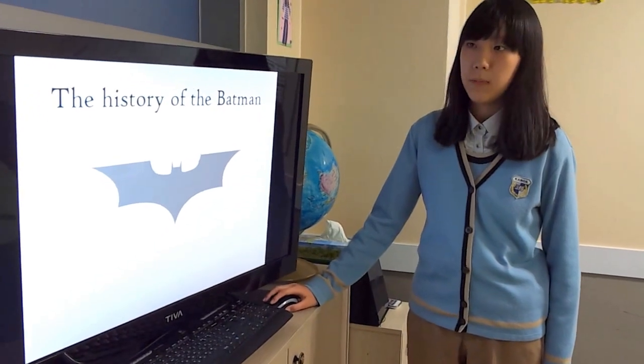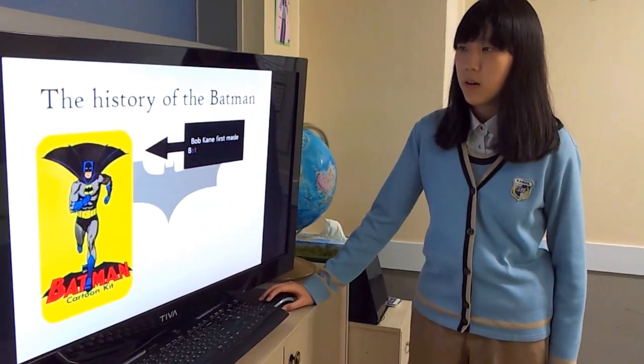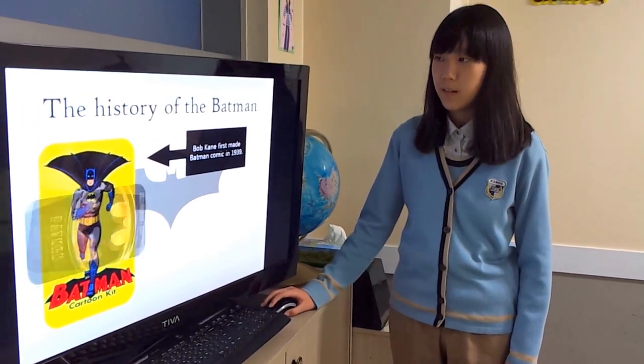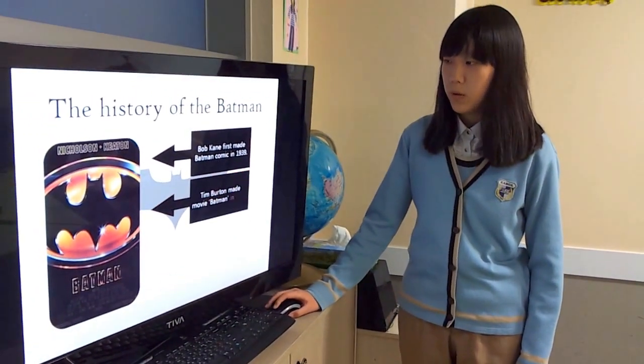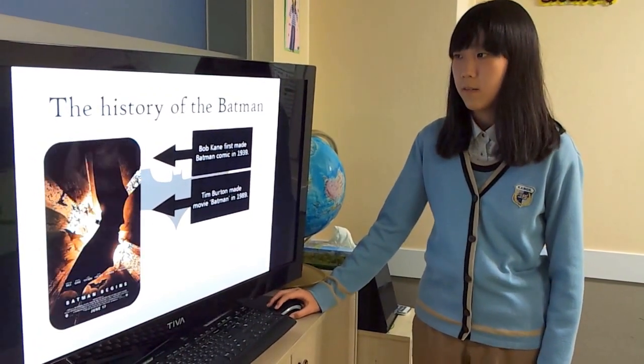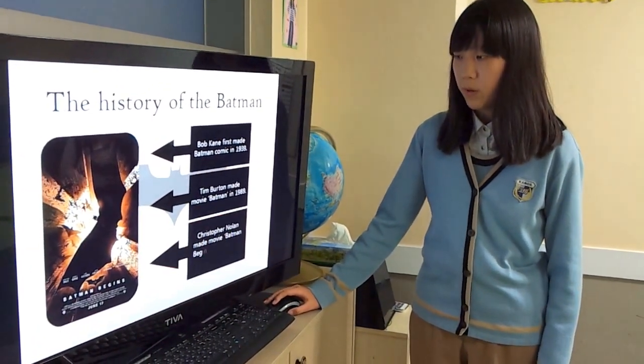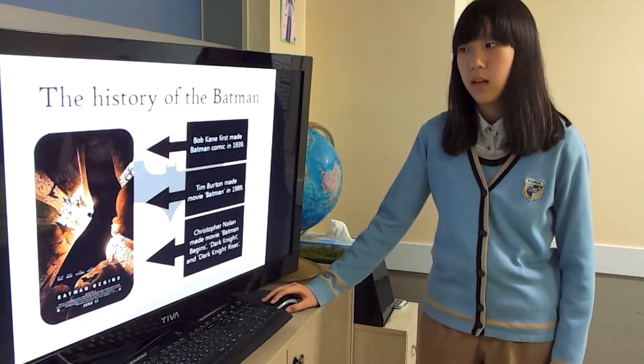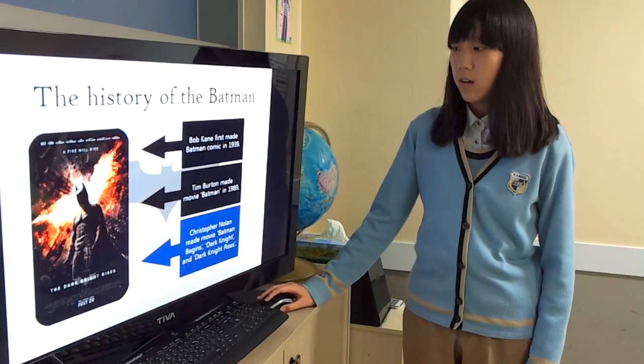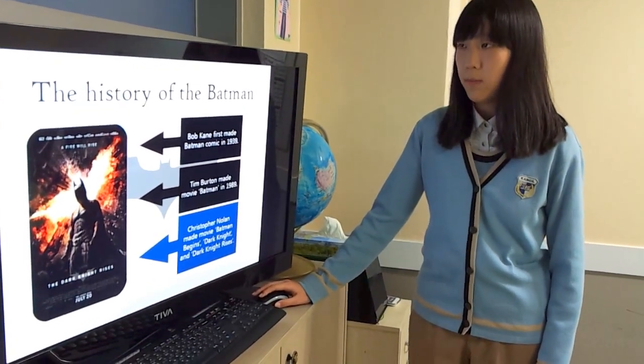The History of Batman: American cartoonist Bob Kane first made Batman comic in 1939. Tim Burton made the movie Batman in 1989. And Christopher Nolan made Batman Begins, Dark Knight, and Dark Knight Rises. Today, I'll mainly talk about this movie director's Batman.